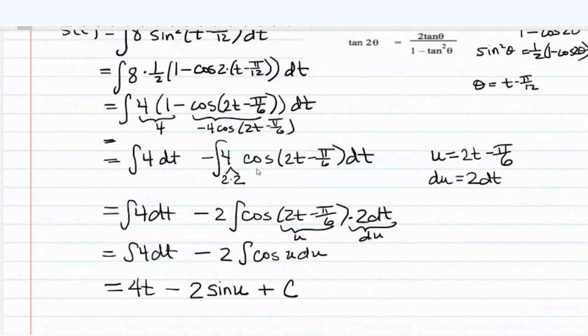So we have 4t minus 2 sine u plus c. And we need to put the u back in. So that's going to be 4t minus 2 sine of what u is equal to, 2t minus pi over 6 plus c.